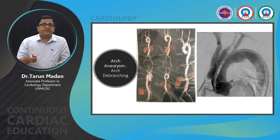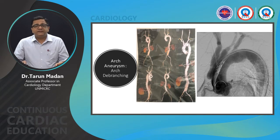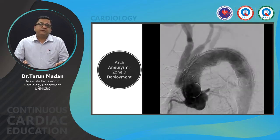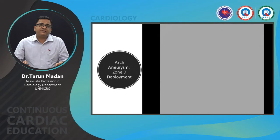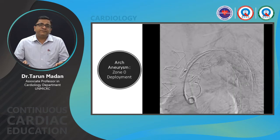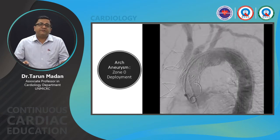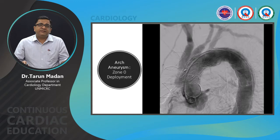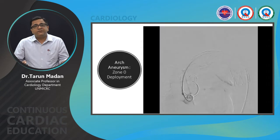Post-bypass CT angiography showed a graft from the ascending aorta to the right and left carotid arteries, with a de-branching bypass to the left subclavian artery. A thoracic Valiant stent graft was then deployed in zone zero, proximal to the innominate artery. Digital subtraction angiography confirmed patent innominate, left carotid, and left subclavian arteries, demonstrating successful hybrid repair.